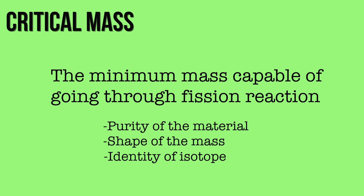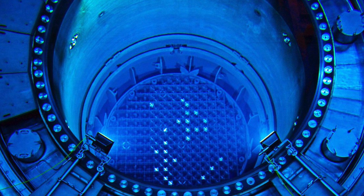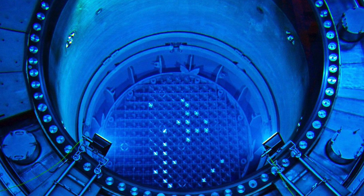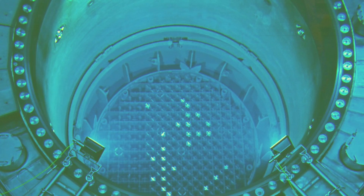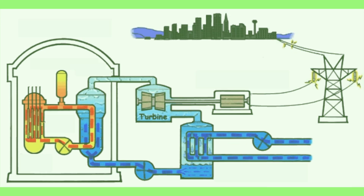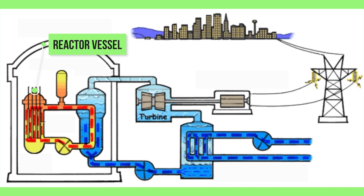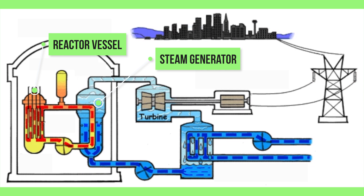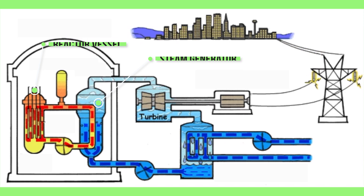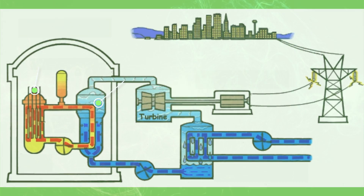If the mass of the fissile isotope is greater than the critical mass, then under the right conditions, the resulting fission reaction can release energy explosively. The energy released by fission in the reactors heats water into steam. The steam is then used to spin a turbine to produce carbon-free electricity.